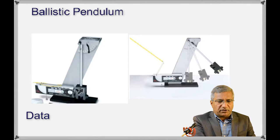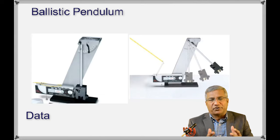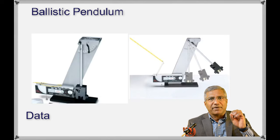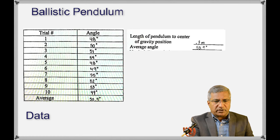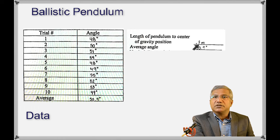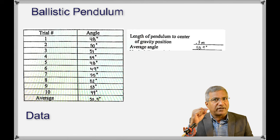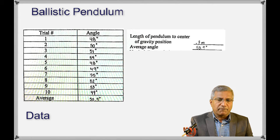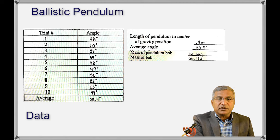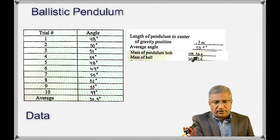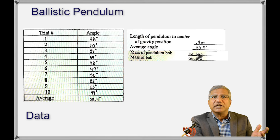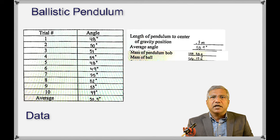The pendulum is taken off and its length is measured — also its mass. Another quantity we need is the mass of the steel ball. The length of the pendulum is 0.3 meters (30 centimeters), measured to its center of gravity, which is the center of the hole into which the ball goes. The mass of the pendulum is 139.38 grams — remember to convert to kilograms when you calculate. You also have the mass of the ball.